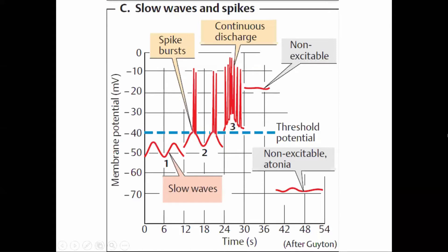When basic electrical rhythm is generated, peristaltic waves, segmentation contraction, and migrating motor complex are generated in the small intestine, because BER is the pacemaker. Once basic electrical rhythm is generated, motility in the small intestine occurs. If basic electrical rhythm is not generated, then there is no motility of the intestine.